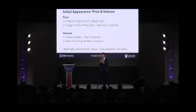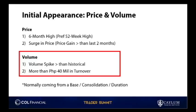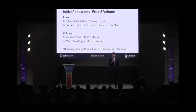The second part is about volume. Normally we look for volume spikes that are greater than historical. When you're trading penny stocks, what it normally looks like is that it's dead — the price and the volume is dead. And then when it breaks out, you want to see that breakout with volume. Normally we look for everything that's greater than 40 million in turnover. In February it was usually greater than 100 million. I'll share with you guys why you need volume together.